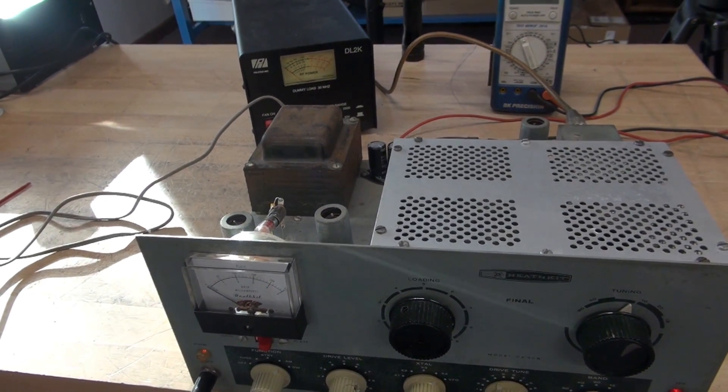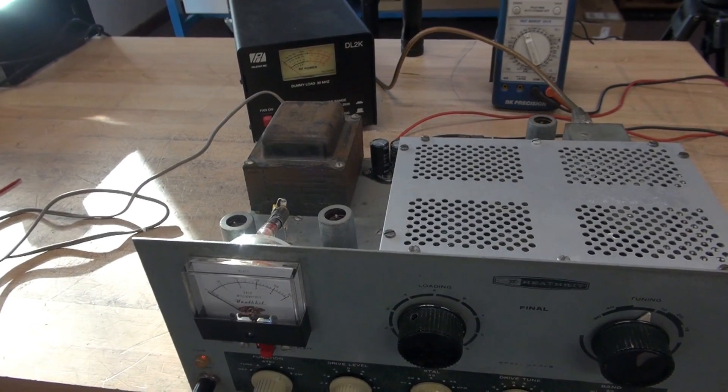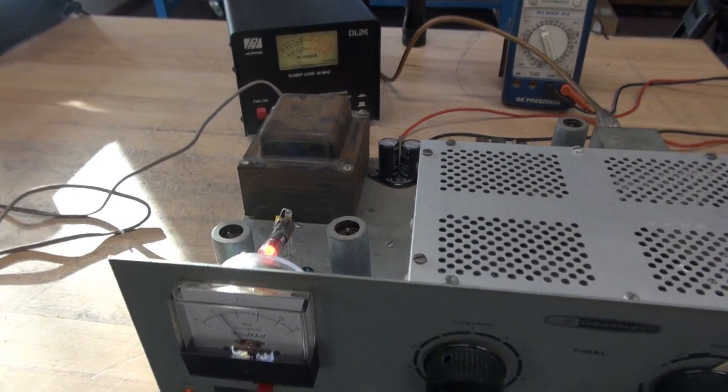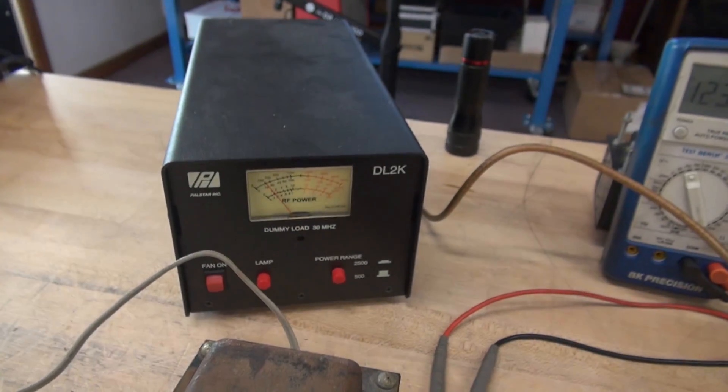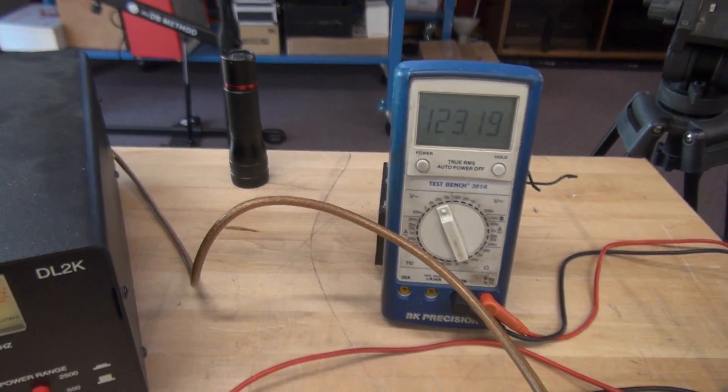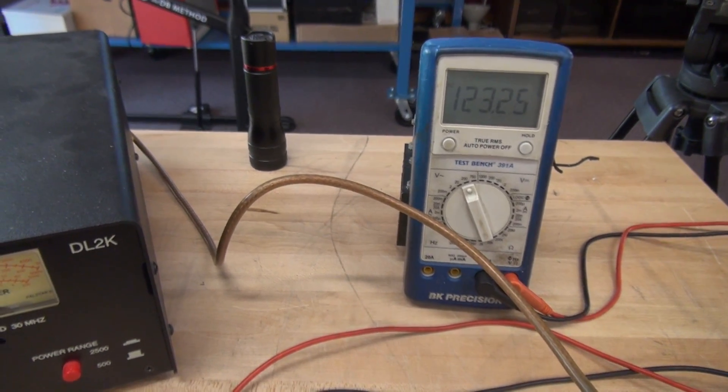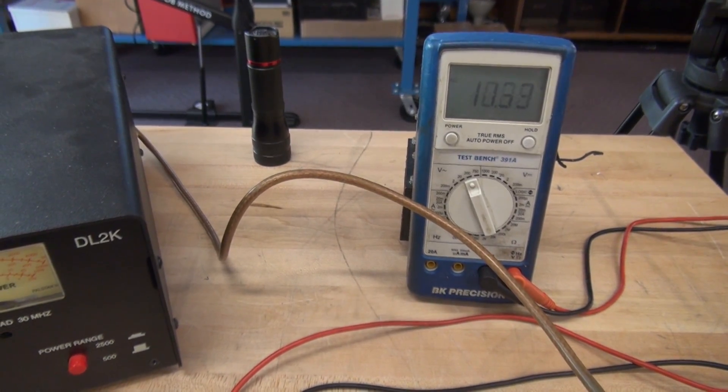All right, radio is powered up. I'm in AM mode. I'm going to key the radio. You see our plate meter, indicator lamp's on, we have output, and 120 volts on the accessory plug for the dow key relay. So she's working well.